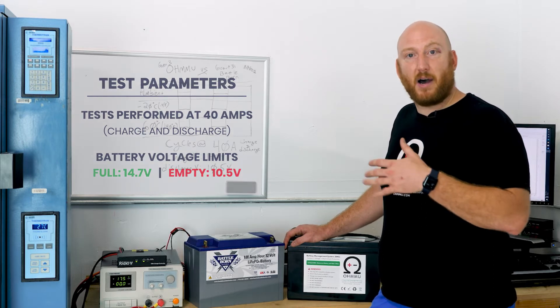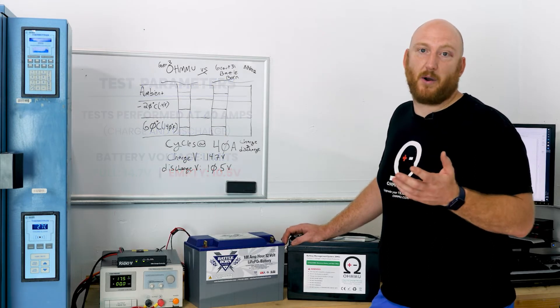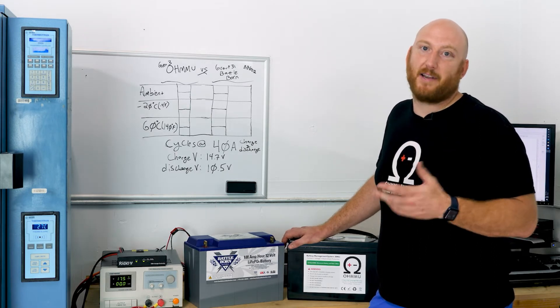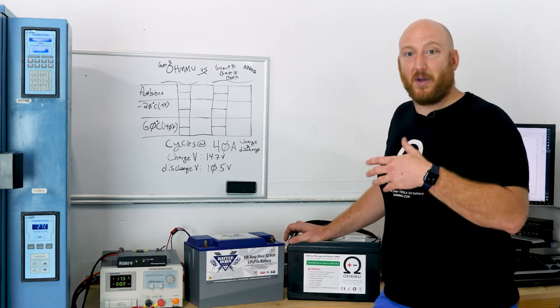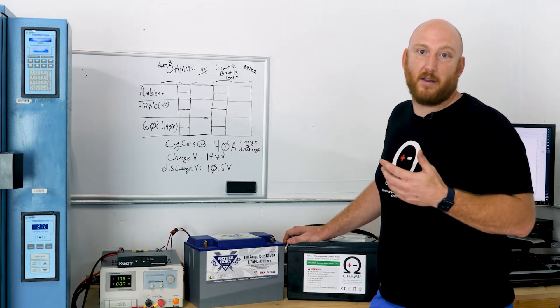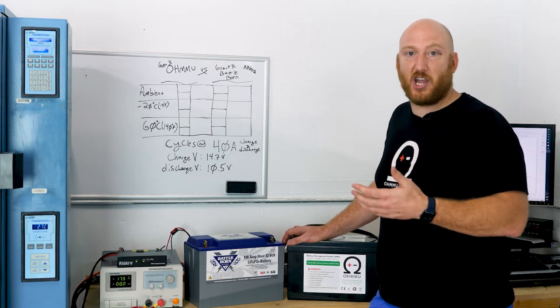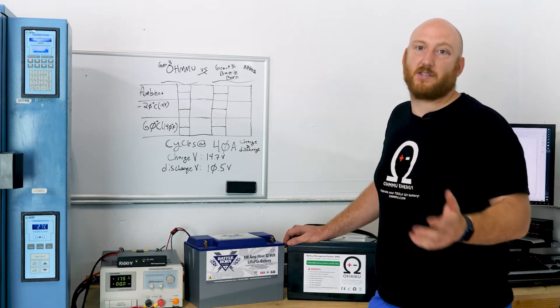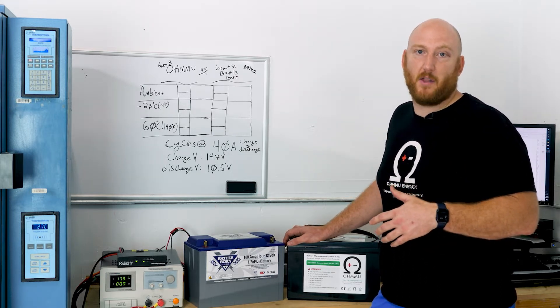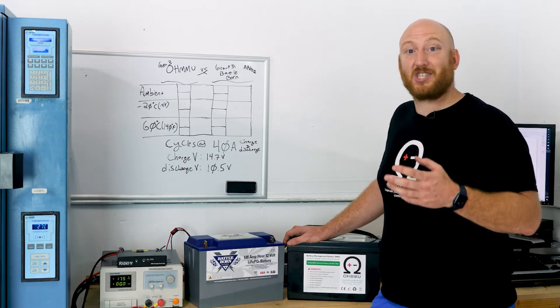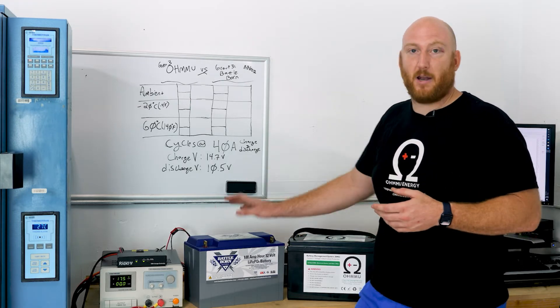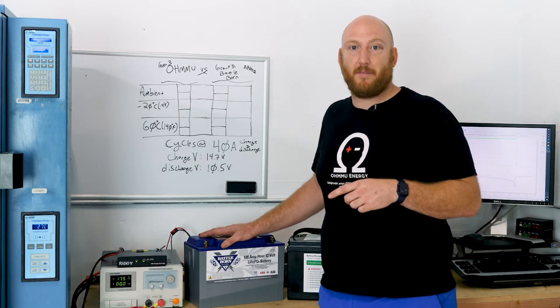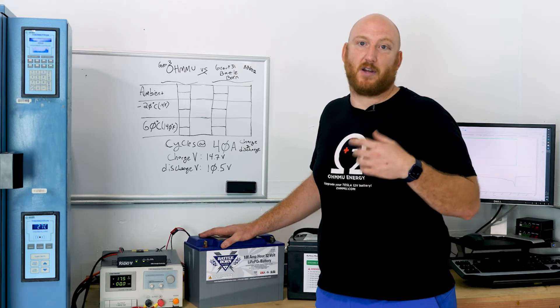The system we're using to do the monitoring and testing is the West Mountain Radio, pretty common system among enthusiasts of battery capacity. We're also going to use a Thermotron environmental chamber. We'll run all the tests in the chamber, but we're only going to run the chamber when we're doing the cold test or the hot test. We're going to start with the Battleborn battery at ambient temperature.